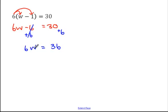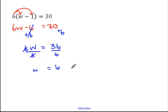So we end up with 6w is equal to 36. And 6w means 6 times w, so the opposite is to divide both sides by 6. 6 divided by 6 is 1, so 1w is equal to 36 divided by 6, which is 6. There are a lot of 6s in that question! So we end up with w is equal to 6.